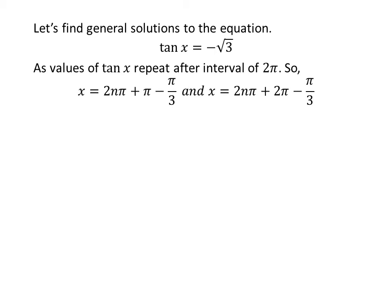Let us find the general solutions. As we know, the values of tangent of x repeat after the interval of 2 times pi. So the general solutions are 2 times n times pi plus pi minus pi upon 3, and 2 times n times pi plus 2 times pi minus pi upon 3, where n is an integer.